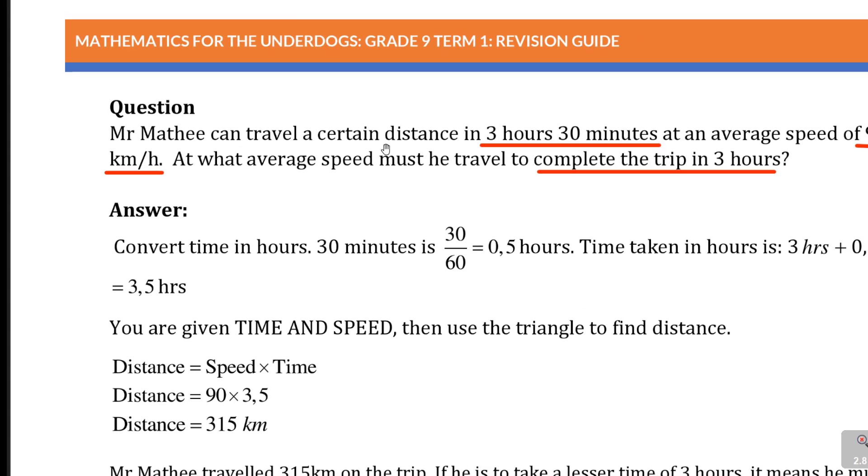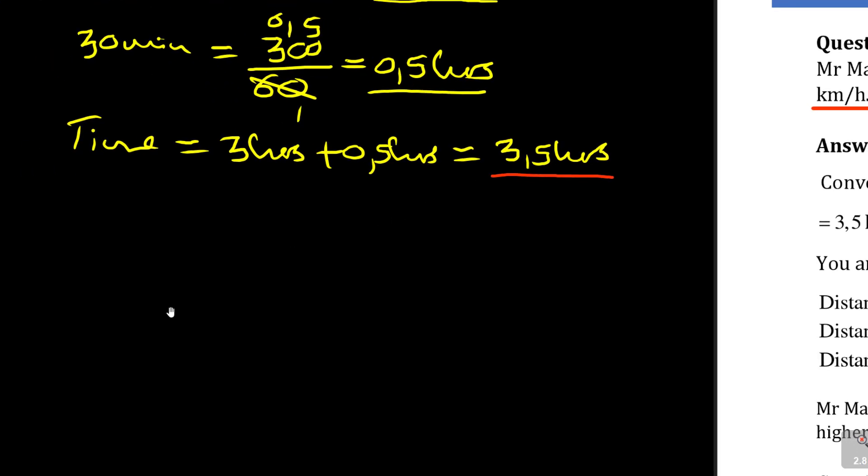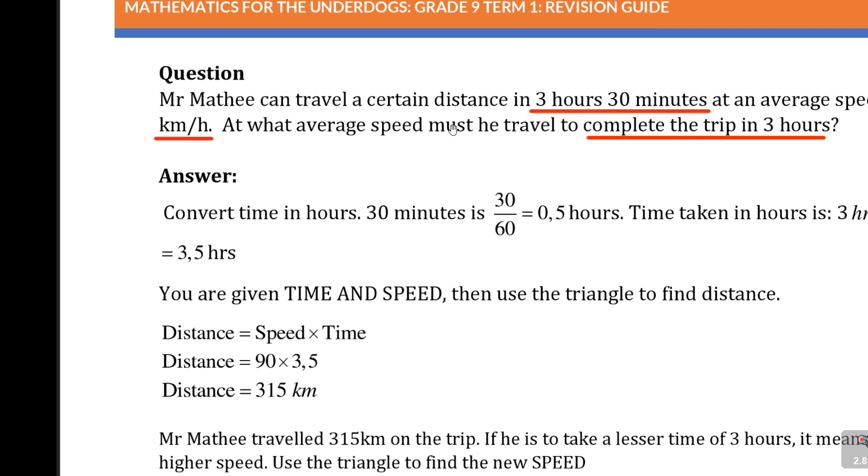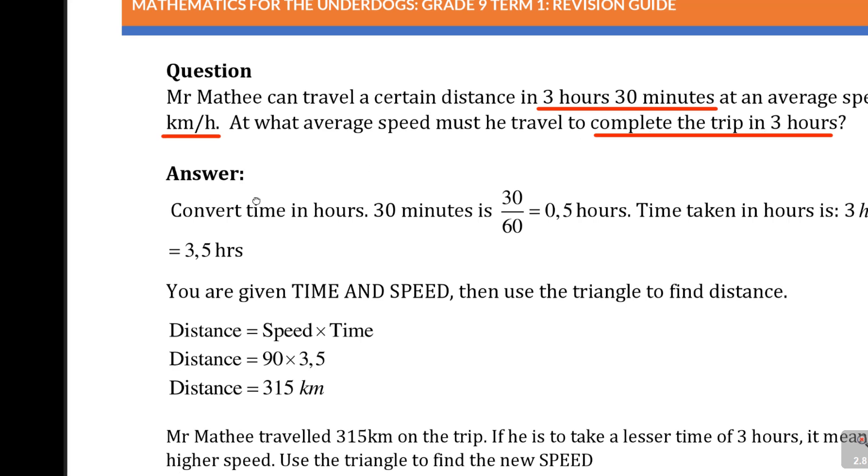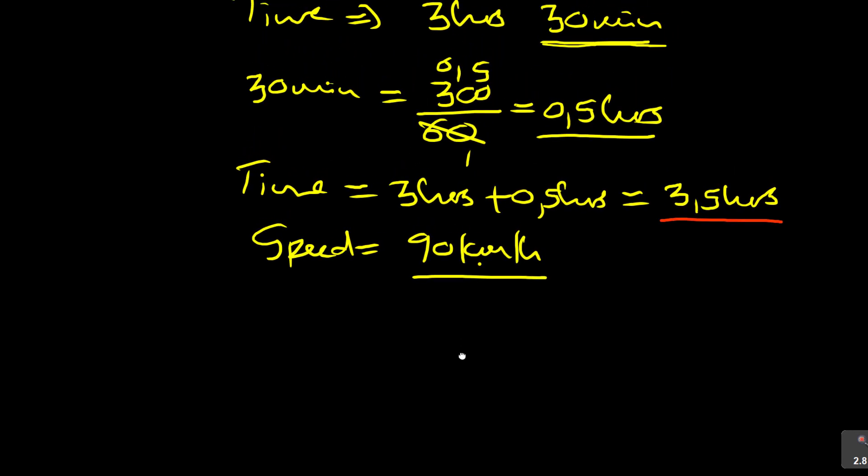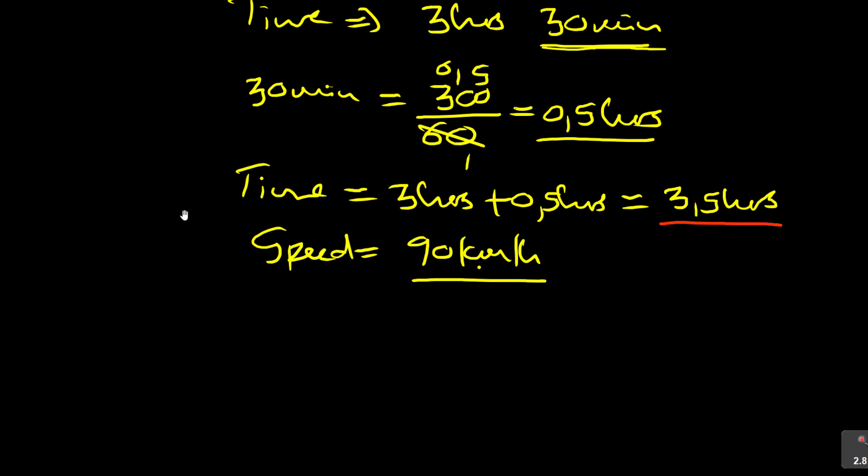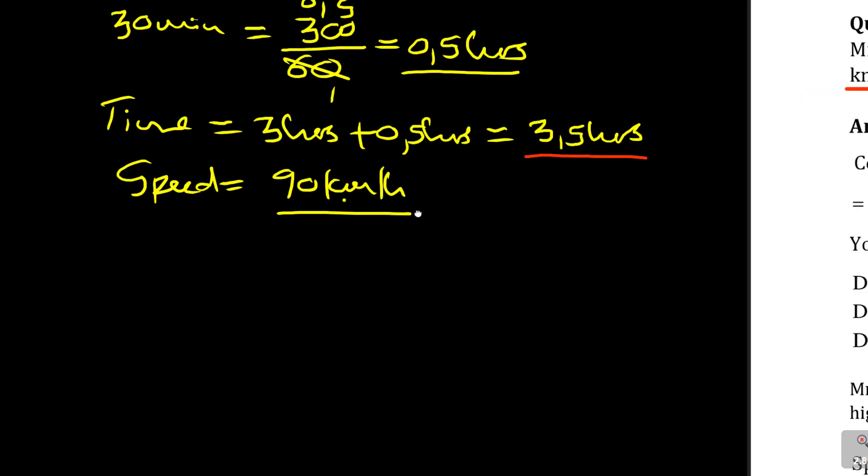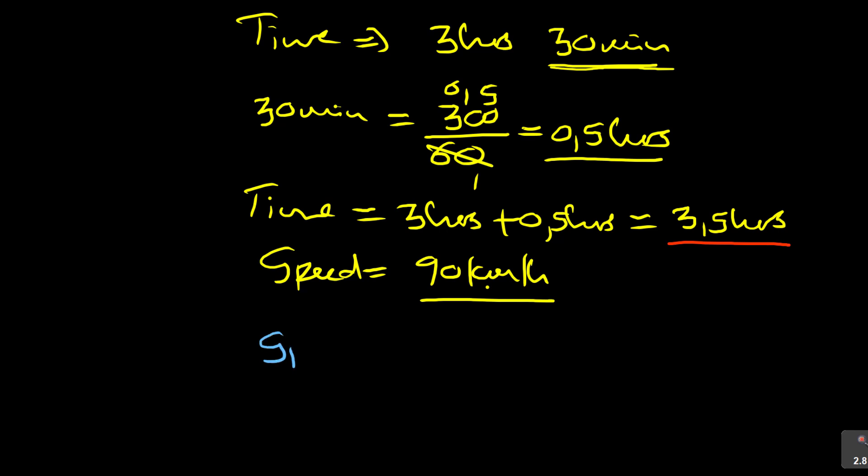So you know that Mr. Mati can travel a certain distance in 3.5 hours at an average speed of 90 kilometers per hour. We write speed is equal to 90 kilometers per hour. Already it's in kilometers, which is good. It's in hours, which is good. So we don't have to convert anything there. The question is, at what average speed must you travel to complete the trip in three hours? We are looking for speed in three hours.